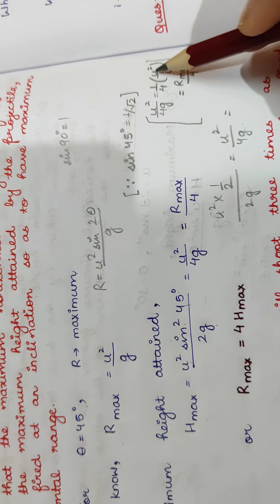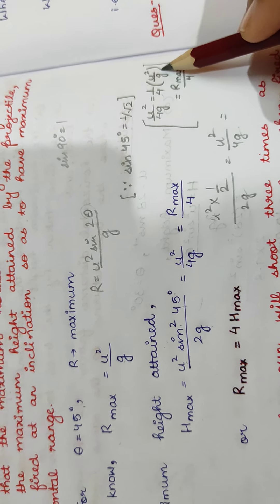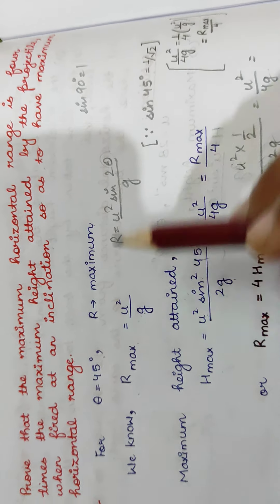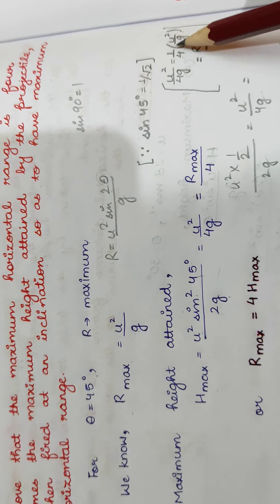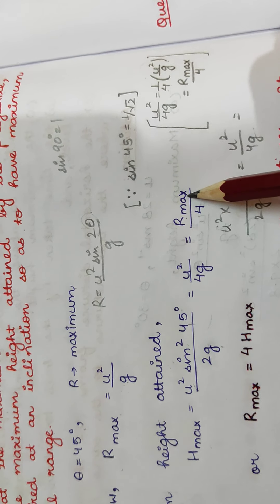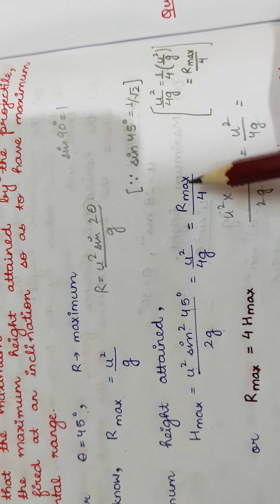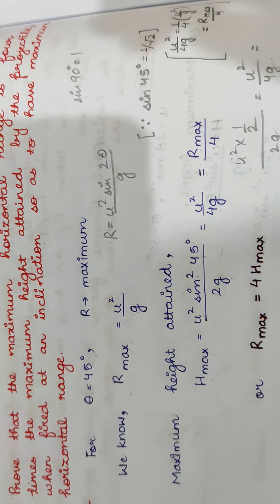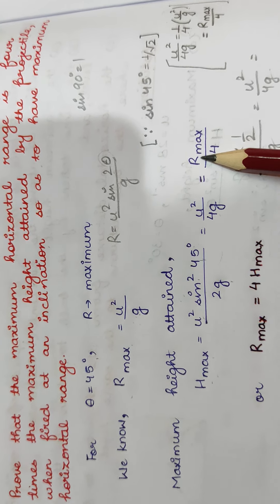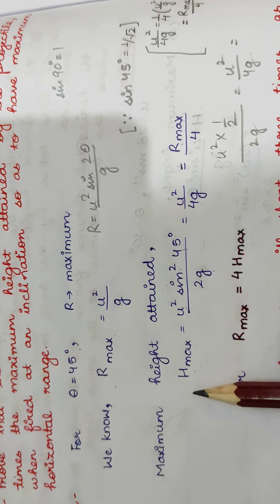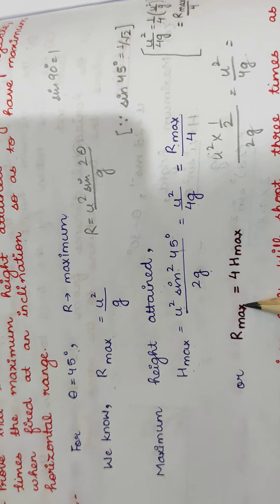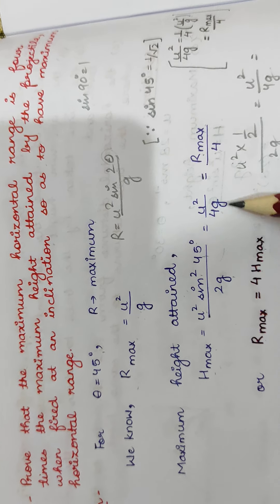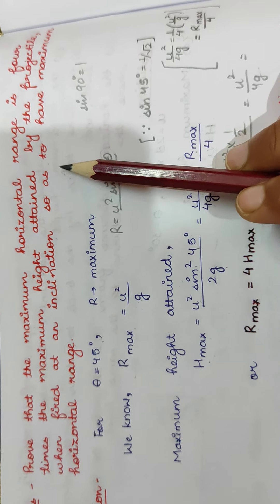We can rewrite u² / 4g as (1/4) × (u² / g). Since u² / g equals R_max, we substitute to get H = R_max / 4. Rearranging, we get that the maximum horizontal range is equal to 4 times the maximum height attained by the projectile, which is exactly what we had to prove.